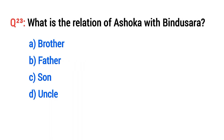Question number twenty-three: What is the relation of Ashoka with Bindusara? The right option is C: Son.